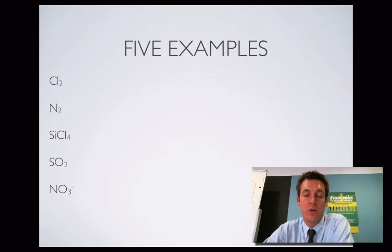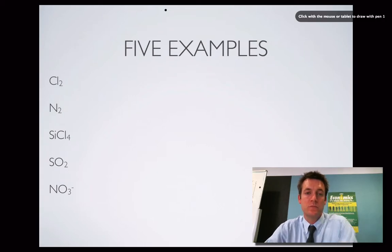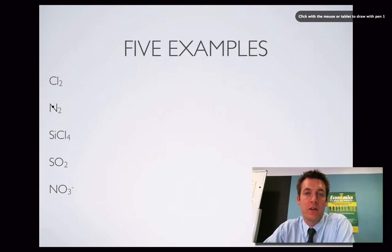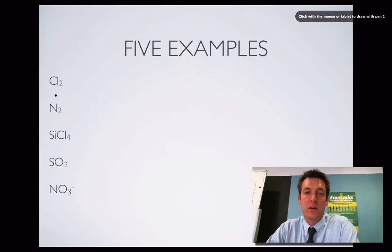Here are the examples we're going to do. We've got a chlorine molecule, which is a simple electron dot diagram using just one covalent bond. We've got nitrogen, another diatomic molecule with a different type of covalent bond. We've got SiCl₄ — silicon tetrachloride — and SO₂ — sulfur dioxide. And then we've got NO₃⁻, which we call the nitrate ion. This one has a charge, which is something we haven't come across in the other ones. We're going to use the rules for all five examples.